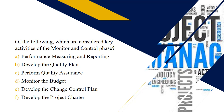Next question: which are considered key activities of the monitor and control phase? There are three options you should select. They are A, C, and D — performance measuring and reporting, performance quality assurance, and monitoring of the budget. This phase also includes governance activities, monitoring the risk and issue logs that you created, and administering the change control process. All of those are associated with the monitor and control phase.